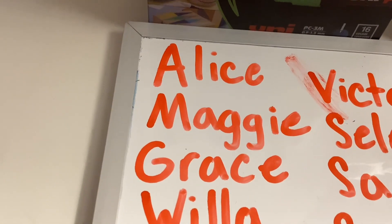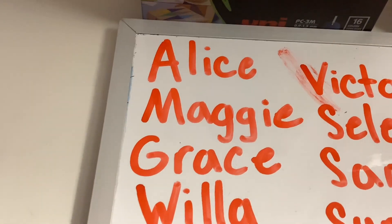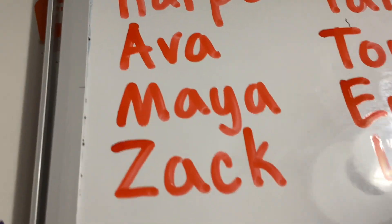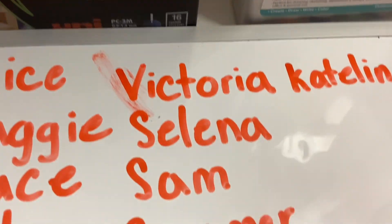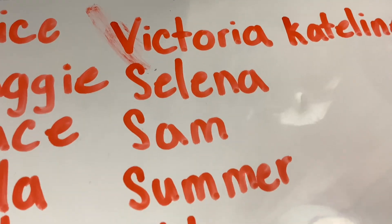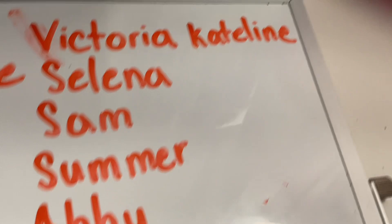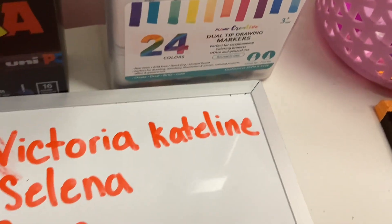So that's my name — Alice, Maggie, Grace, Willa, Bella, Harper, Ava, Maya, Zach, Victoria, Selena, Sam, Summer, Abby, Tamara, Tommy, Emerald, Liam, and Caitlin.